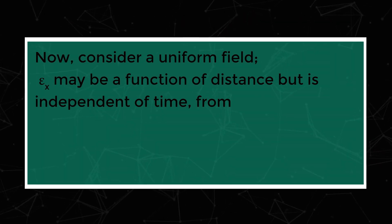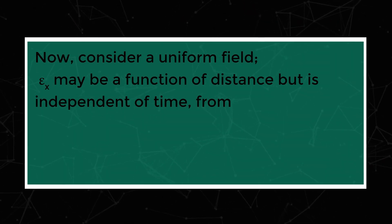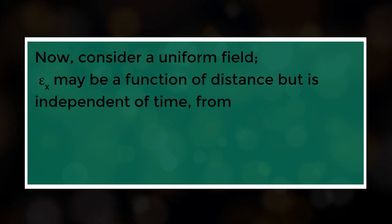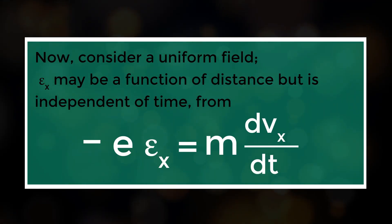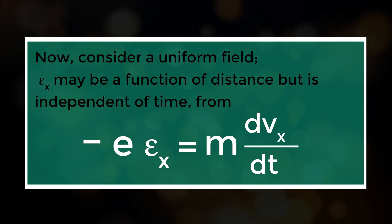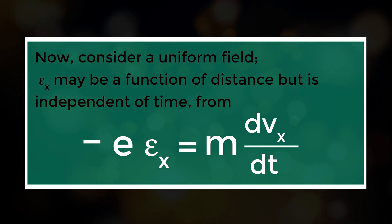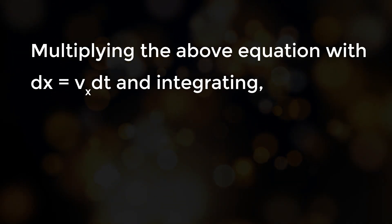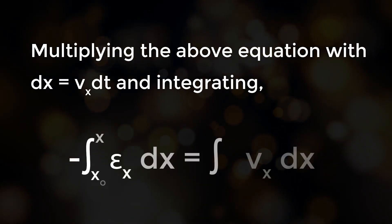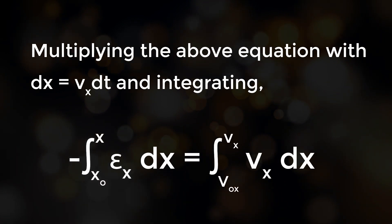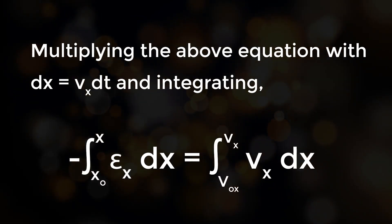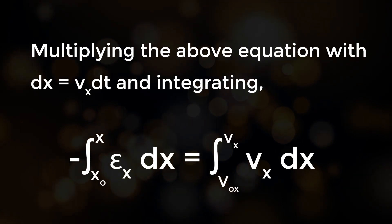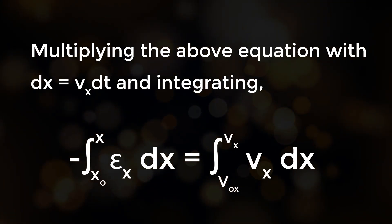Now consider a uniform field. Ex may be a function of distance but is independent of time. From minus e times Ex equals m times dvx by dt, multiplying the equation with dx equals vx dt and integrating: minus integral from x0 to x of Ex dx equals integral from v0x to vx of vx dvx.